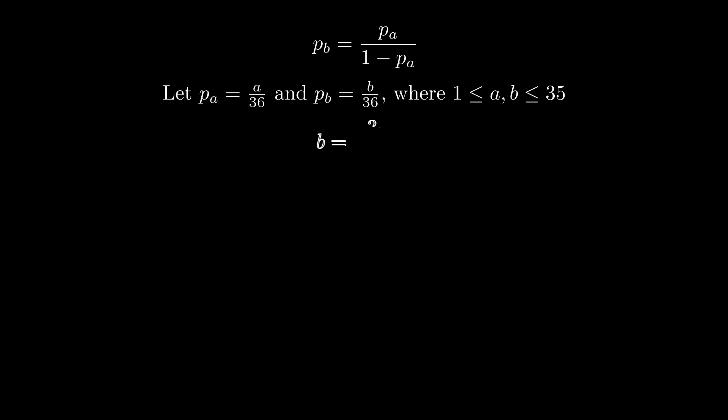Therefore, we get B equal to 36A over 36 minus A. By factorization, 36 minus A times 36 plus B is equal to 1296.